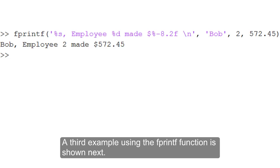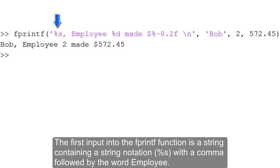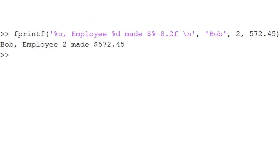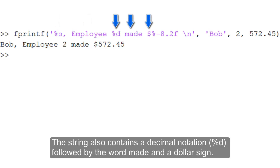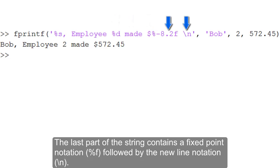A third example using the fprintf function is shown next. The first input is a string containing a string notation with a comma followed by the word employee. The string also contains a decimal notation followed by the word made and a dollar sign. The last part of the string contains a fixed point notation followed by the new line notation.